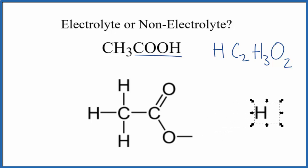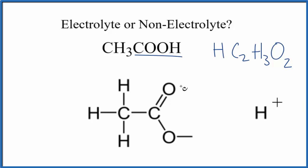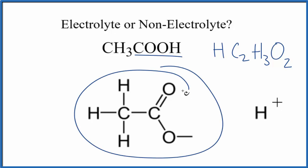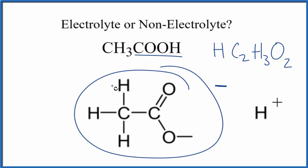This hydrogen can come off the acetic acid — it'll be positive, so it'll be an ion. The remaining portion is called the acetate ion, and it's negative. Since we have these charged particles — ions — acetic acid is an electrolyte.